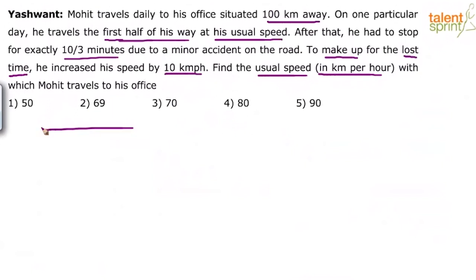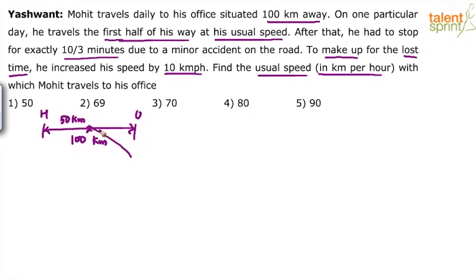The total distance is 100 kilometers — from home to office. On that particular day, he travels the first half at his usual speed, so up to 50 kilometers there was no problem. The problem came at that midpoint: he lost 10/3 minutes due to the accident, and that affected the remaining 50 kilometers. Because he wanted to reach the office on time, he increased his speed for the remaining 50 kilometers.